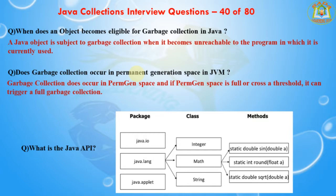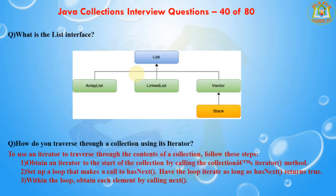The next question is: what is the List interface? The List interface provides support for ordered collections of objects. The list may contain duplicate elements. The implementation classes of the List interface are ArrayList, LinkedList, Vector, and Stack.